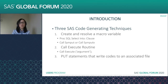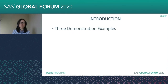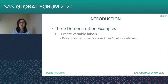The last technique is to use PUT statements to write SAS code to an associated file. All three techniques utilize some kind of a driver dataset to drive the programming. We are going to demonstrate the code generators using three examples. First, we are going to create variable labels automatically out of a specification file that's in the format of an Excel spreadsheet.